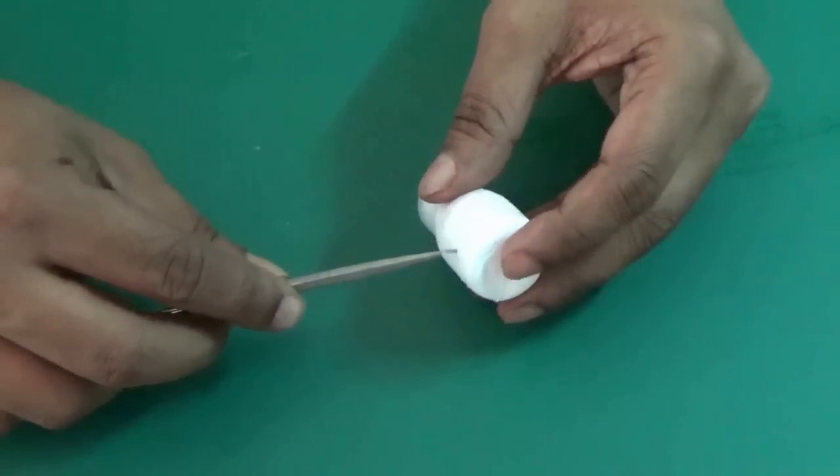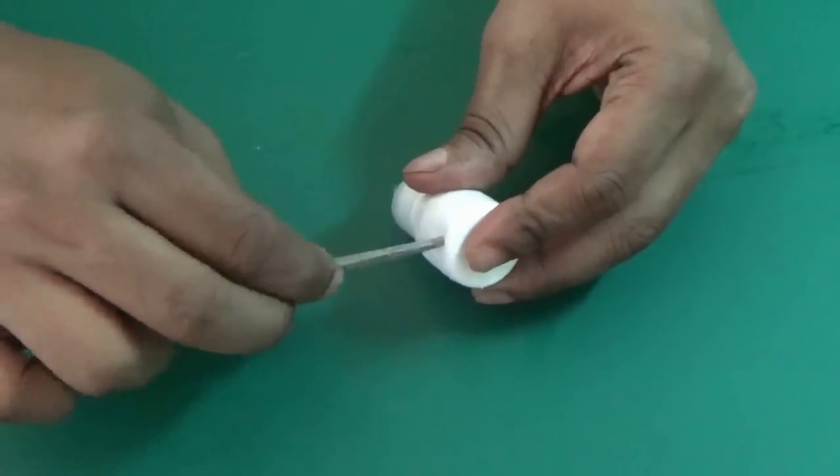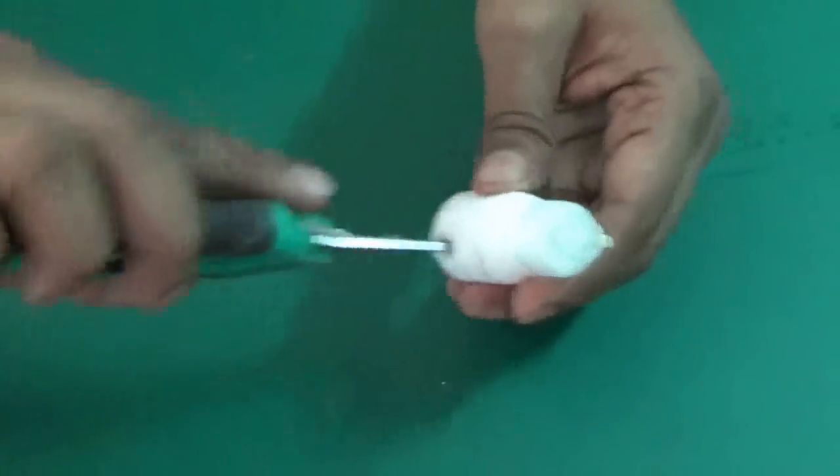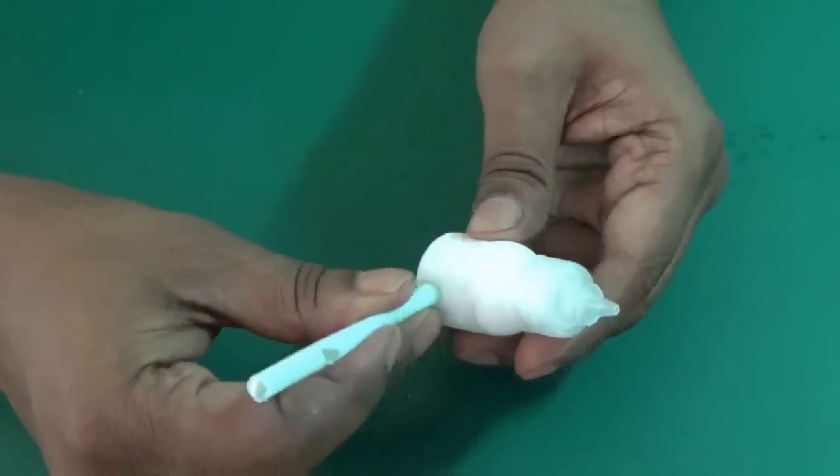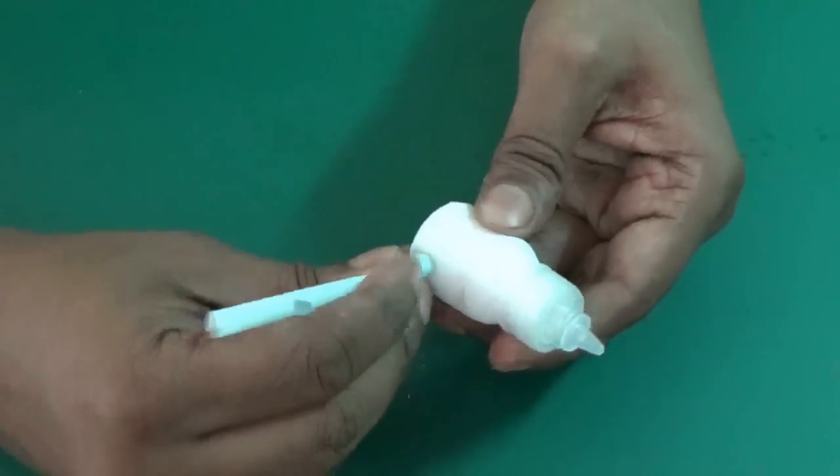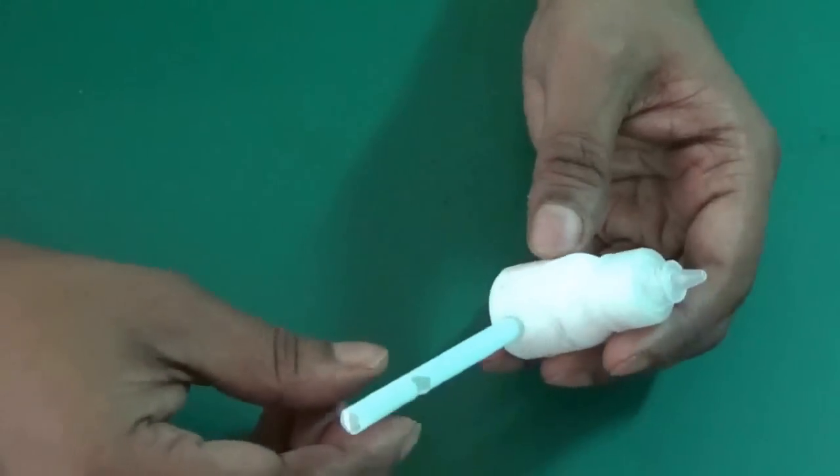Now you need a plastic bottle like this. This is an eye drop medicine bottle. Make a hole at the bottom and insert the straw whistle we made.